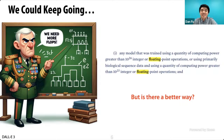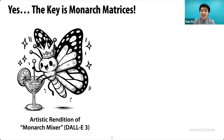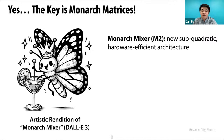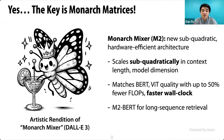I want to pose a different question: is there a better way? Can we find a single primitive that scales subquadratically to replace both the MLP and the attention layers in these models? The answer is yes, and the key is a primitive called Monarch matrices. Monarch Mixer is a new subquadratic hardware-efficient architecture that scales subquadratically in context length and model dimension, matching BERT and vision transformer quality with up to 50% fewer FLOPs and faster wall clock times.